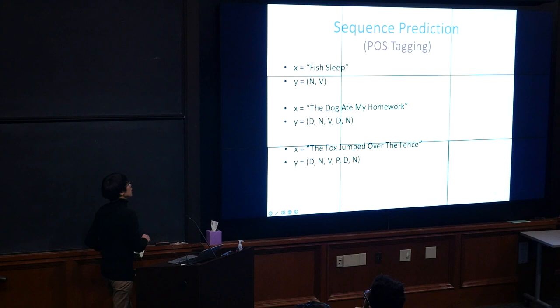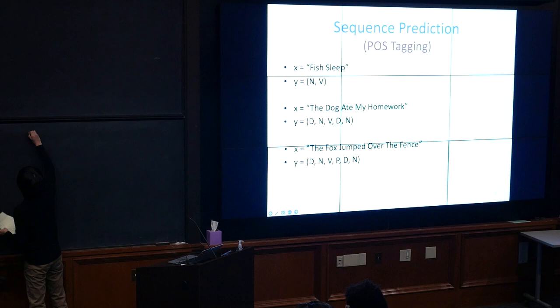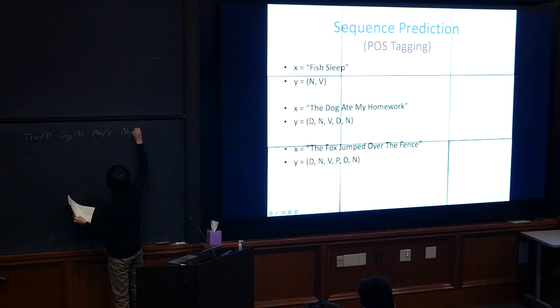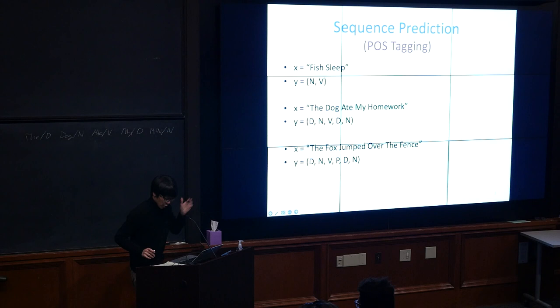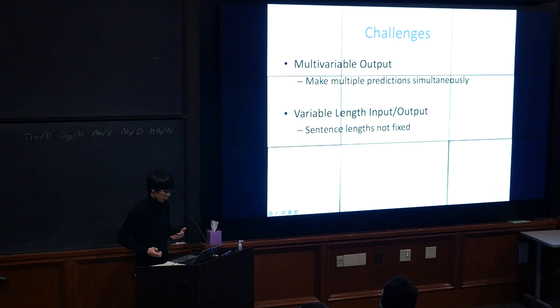If you actually do NLP, the syntax you'll see is the tag coming after a slash — so it'll be 'the/DT dog/NN ate/VB my/DT homework/NN'. Here we're representing them as x and y vectors. The challenge of this kind of task is first that you have a multivariable output — we're not just predicting is this sentence zero or one, we're predicting a sequence from an input sequence. Just the fact that it's a multivariable output poses a challenge.